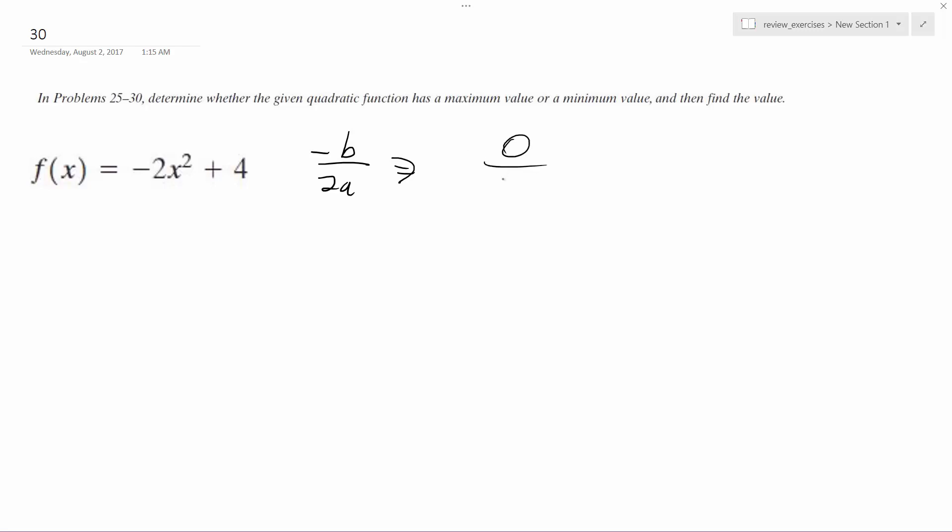0 over 2a, which is just 0. So it's going to be at 0, 0.